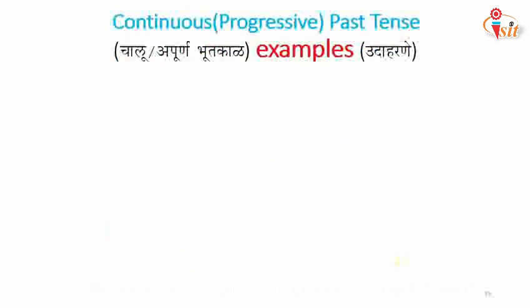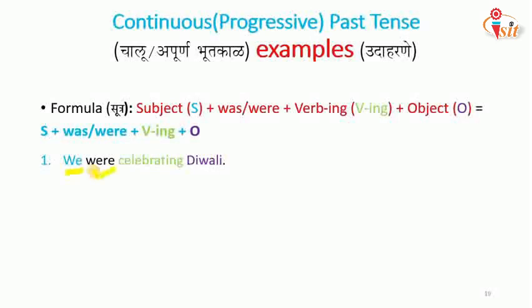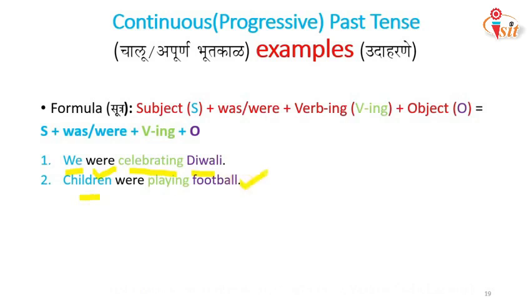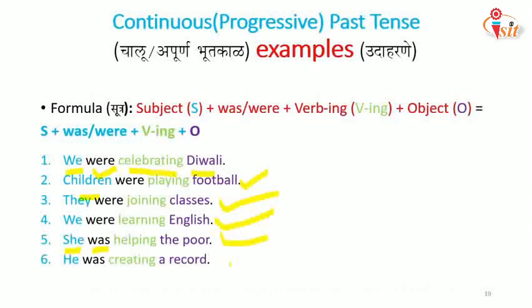Let's see more examples of past continuous. We were celebrating Diwali. Children were playing football. They were joining classes. We were learning English. She was helping the poor. He was creating a record. Sachin was scoring a hundred.